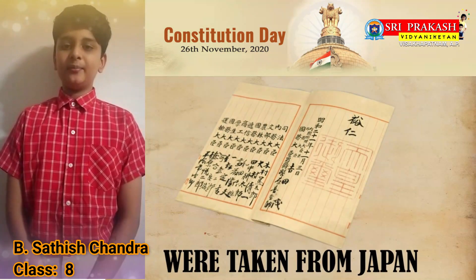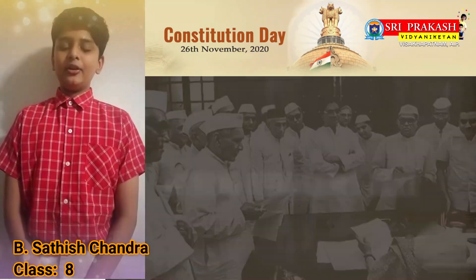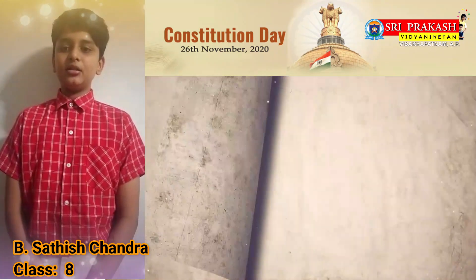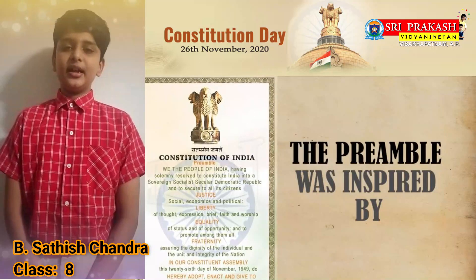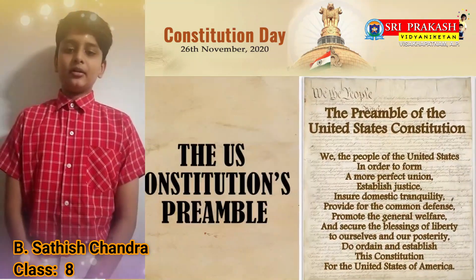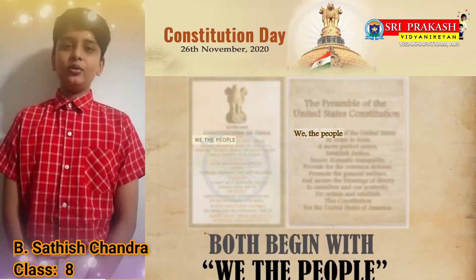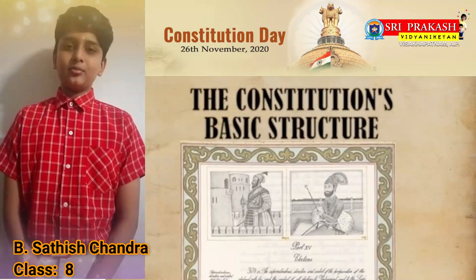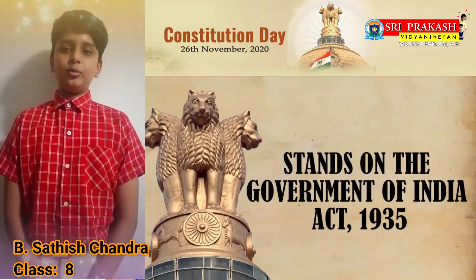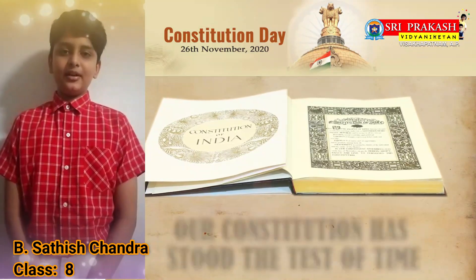Our Constitution was adopted by our government on 26 November 1949. It has 448 articles divided into 25 parts with 12 schedules. Now let us know the basic fundamental rights. There are seven fundamental rights provided by our Constitution: right to equality, right to freedom of speech, right against exploitation, right to Constitutional remedies, right to property, and cultural and educational rights. Thank you and have a nice day.